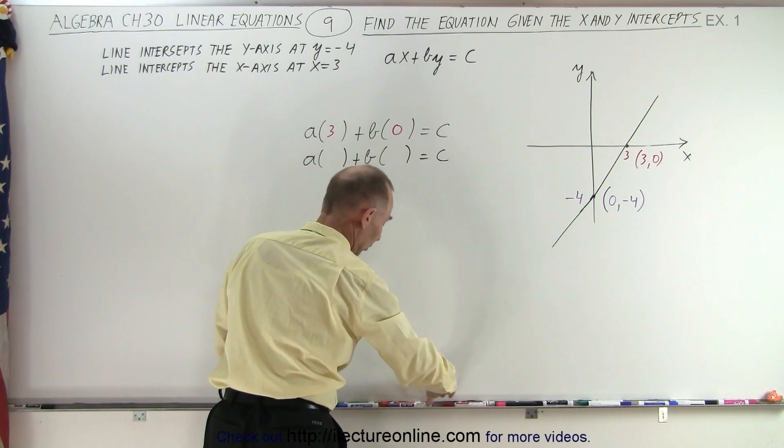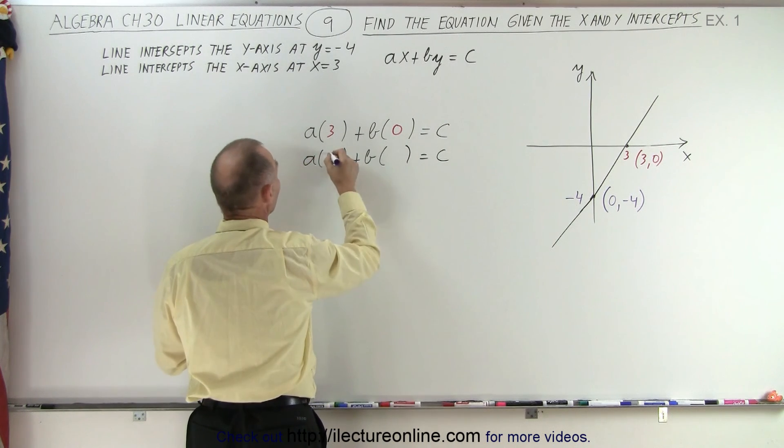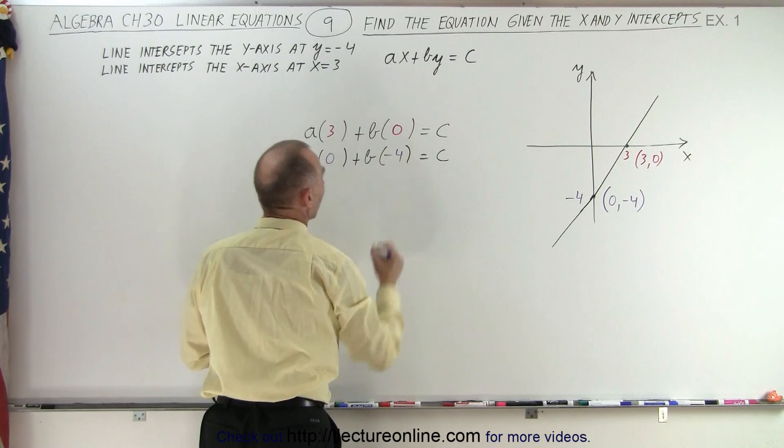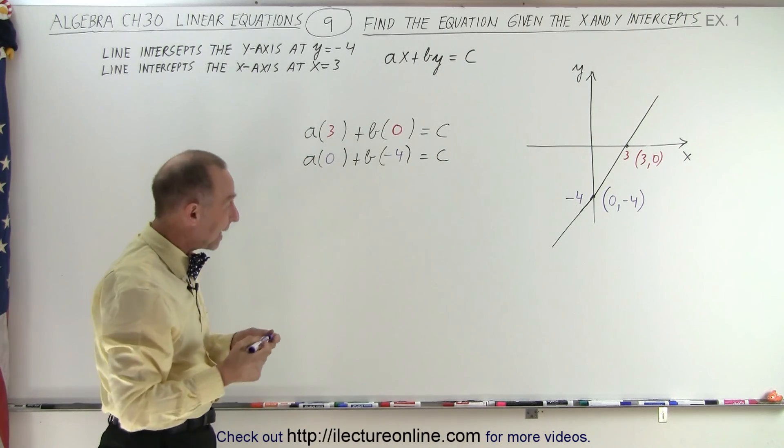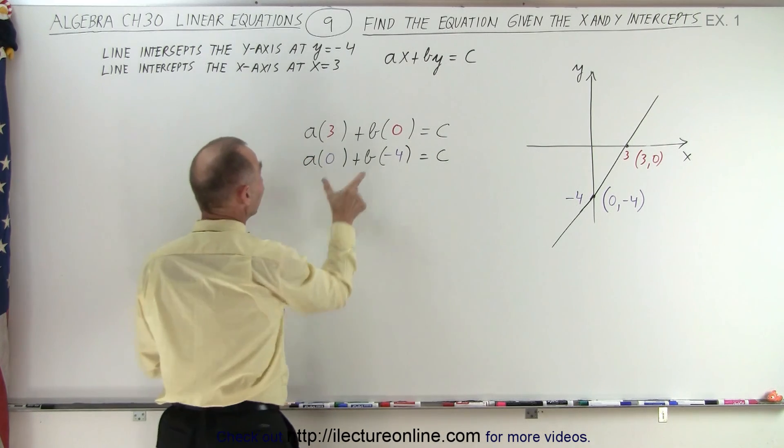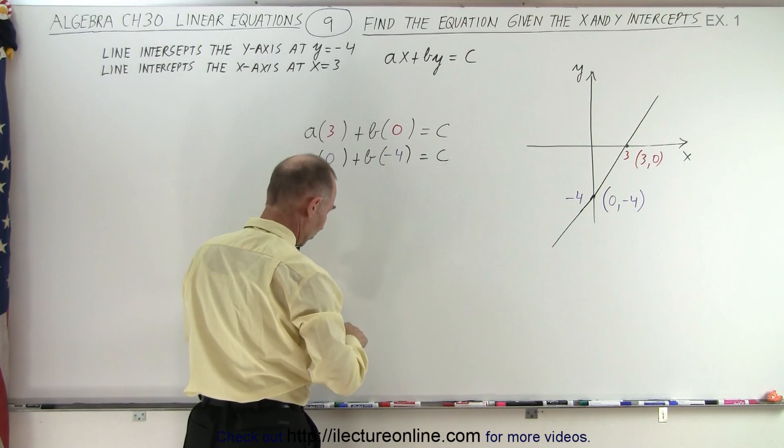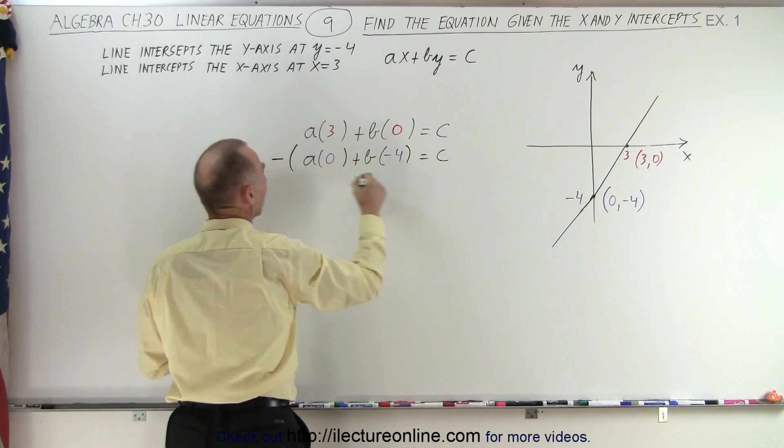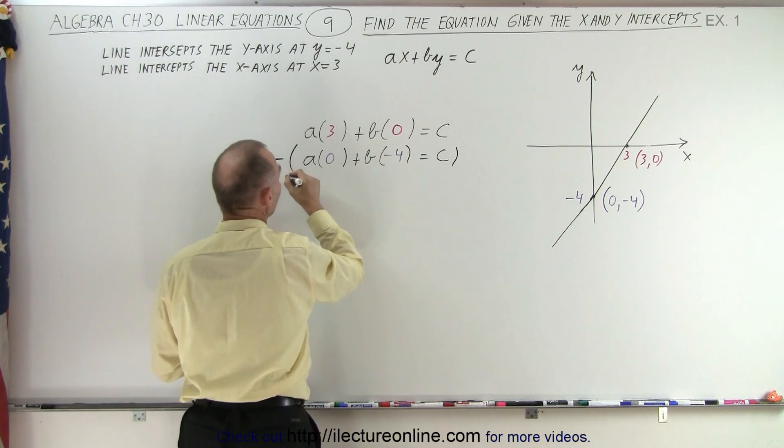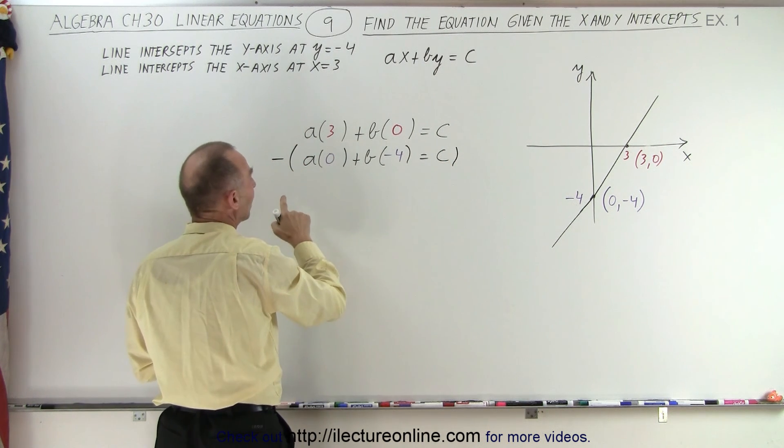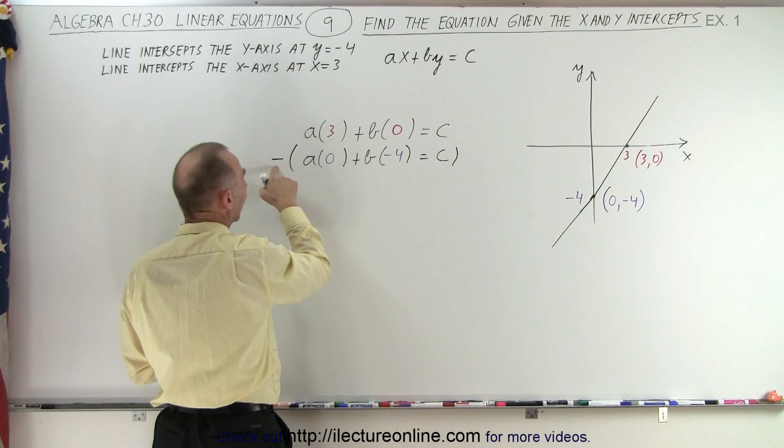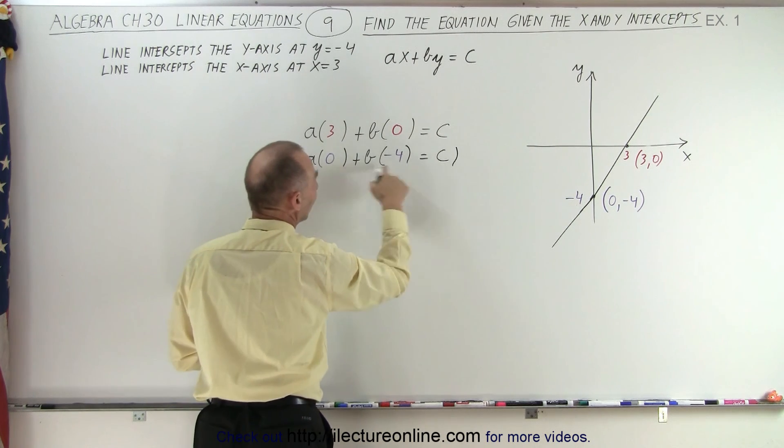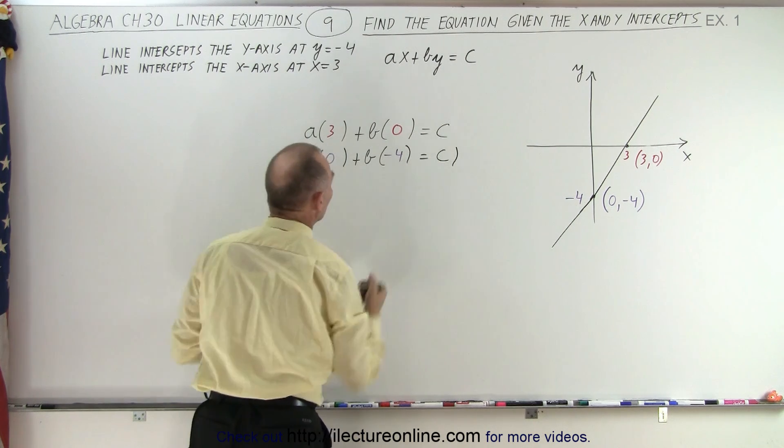We're going to take a times x plus b times y and that equals c. In this case, we're going to use 0 and negative 4. Now, in order to eliminate c, we're going to subtract the second equation from the first equation. The easiest way to do that is simply multiply the negative in both sides of the second equation and then add the two equations.